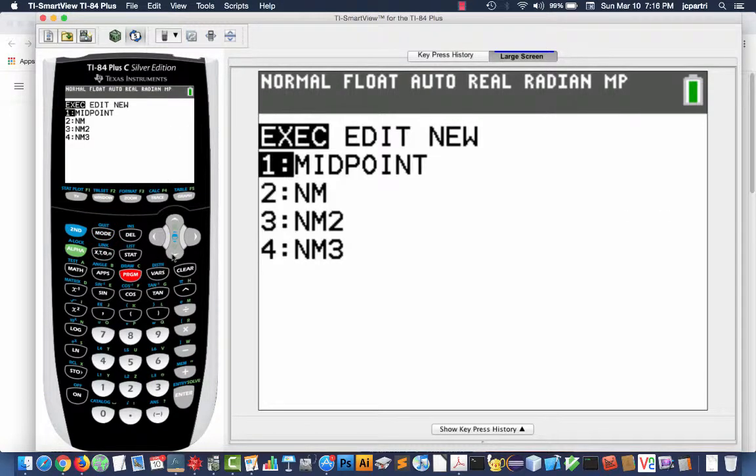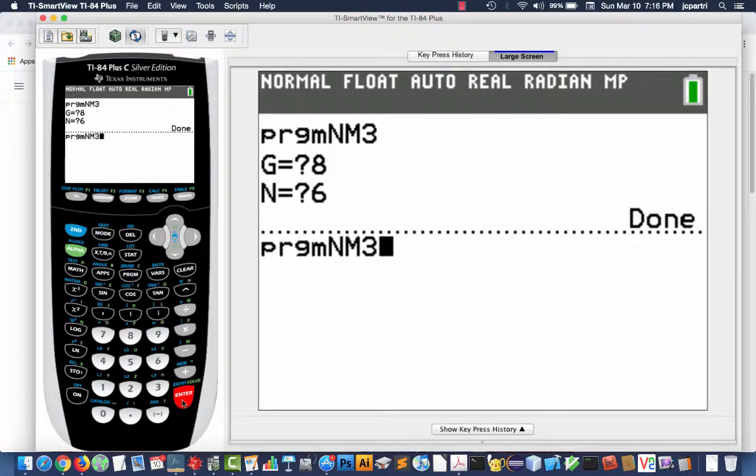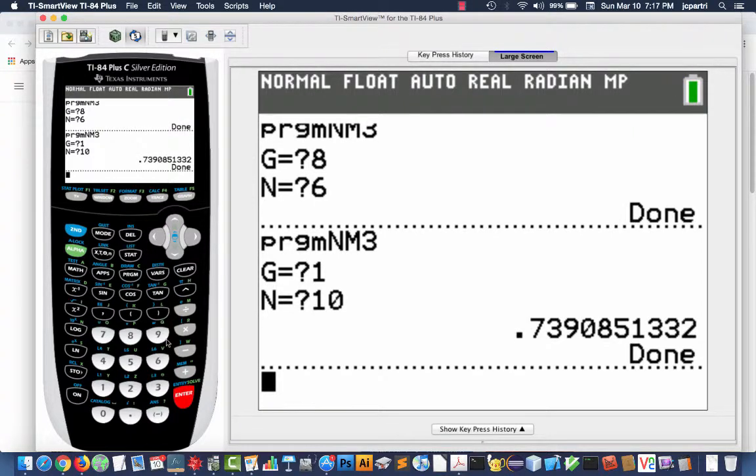All right, now, let's go to my program, NM3. Enter again. All right, what is your guess point? All right, well, I'm going to say that it's approximately around 1, and then we'll just let the program run from there. I'm going to run 10 iterations, and it says that the value in radian measure is about 0.7390851332.